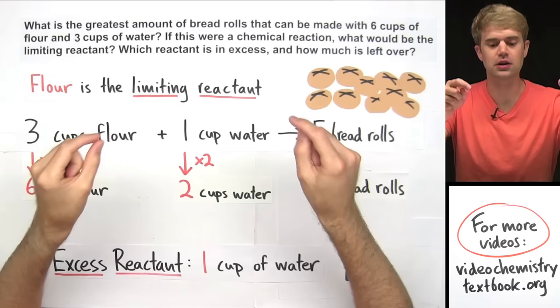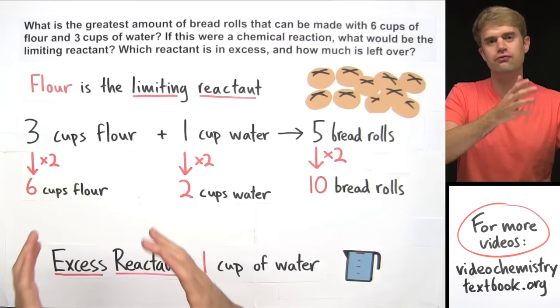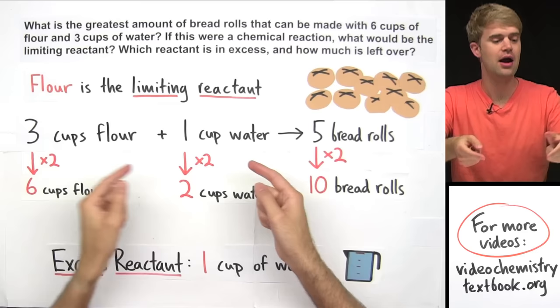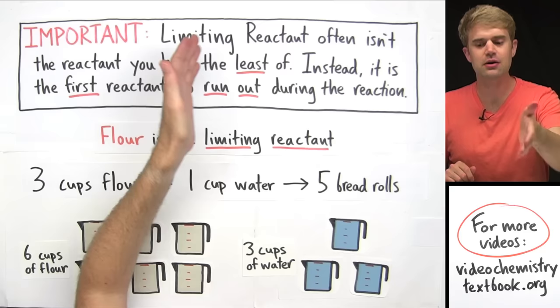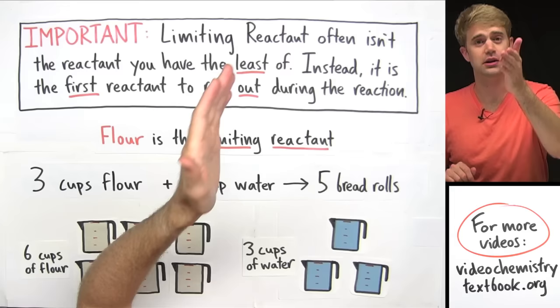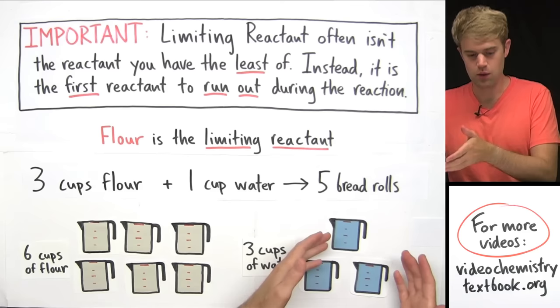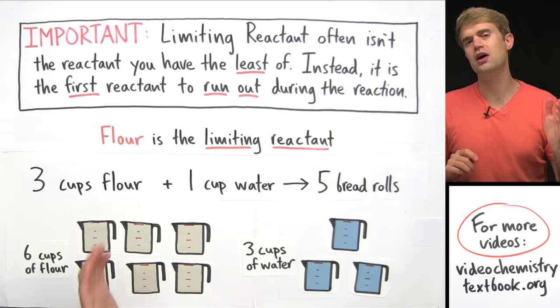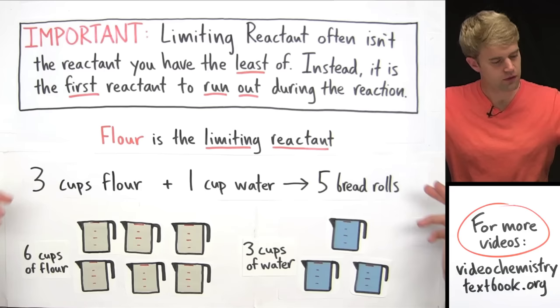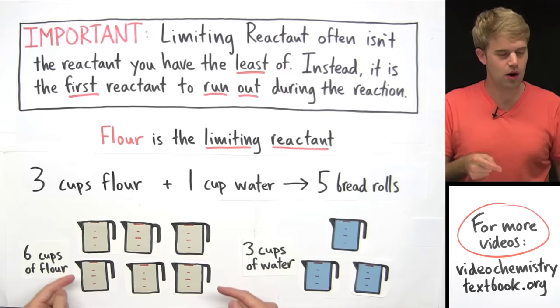So that's how you solve these kinds of problems: ask how much of the other ingredient you need if you use the maximum of one, then flip and do the opposite, and see which one runs out first. Here's an important misconception to address: limiting reactant is NOT the thing you have the least of. Look at our example — we had more flour than water, but flour was the limiting reactant. That's because limiting reactant is the thing that runs out first. Even though we had more flour, when following this recipe, the flour gets used up before the water does.